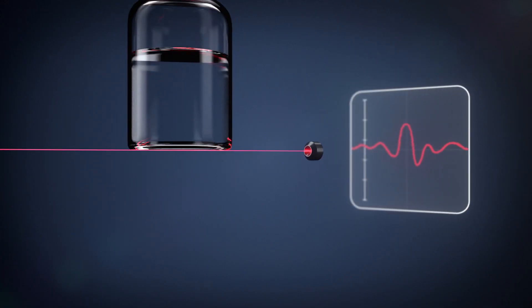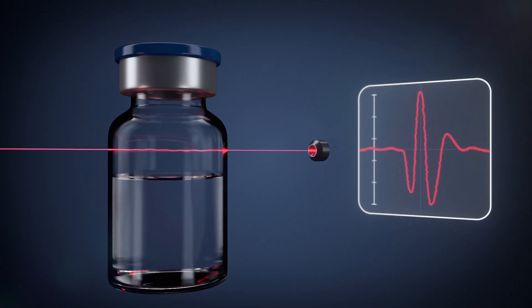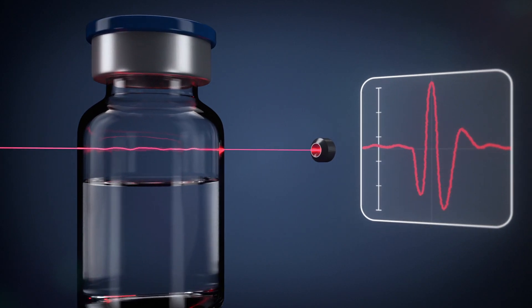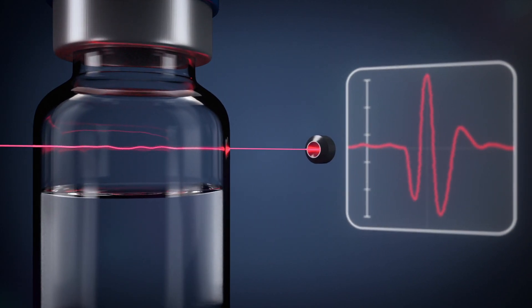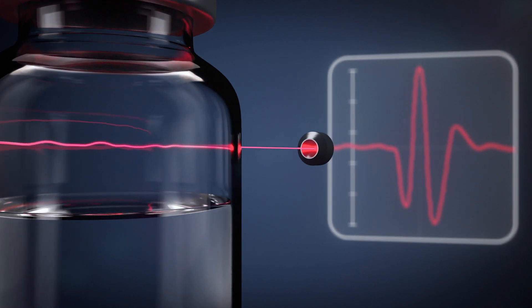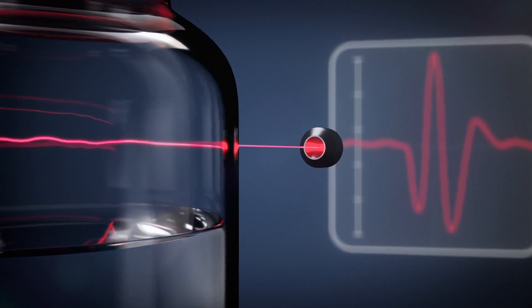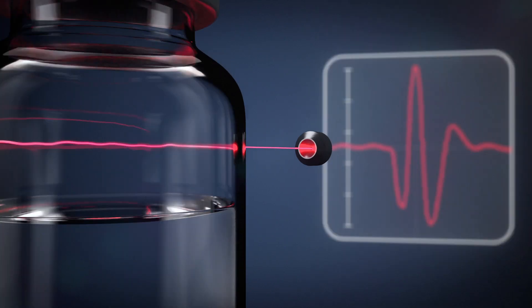The laser light is tuned to match the absorption frequency of oxygen. A detector measures how the light is absorbed as it passes through the headspace. Within seconds, the headspace oxygen levels in the sealed vial are accurately quantified.